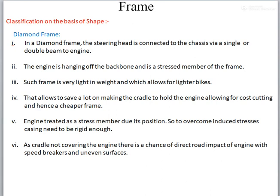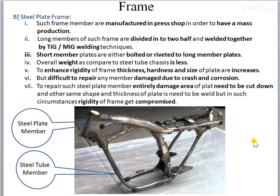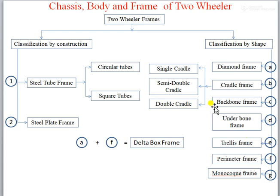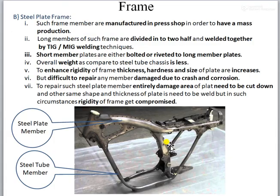Hello class. In this lecture we will see a classification of the two-wheeler frame on the basis of its shape. Two-wheeler chassis are classified as diamond frame, cradle frame, backbone frame, underbone frame, release frame, perimeter frame, and monocoque frame. By combining features of the diamond frame and the perimeter frame we get another shape called the delta box frame. We will see one by one the features or significance of each frame classified on the basis of shape.